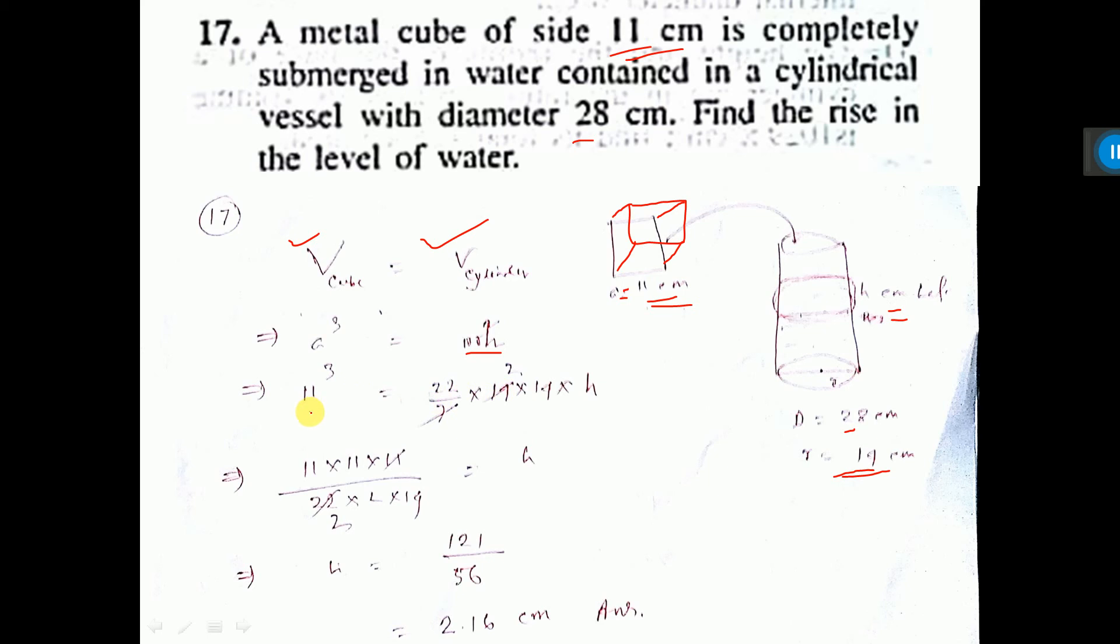A cubed, that is 11 square. Pi value 22 by 7, and R is equal to 14. You see here I calculate 14, 28 by 2 that is 14. And S is left.